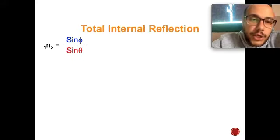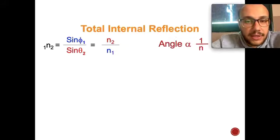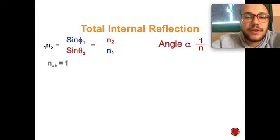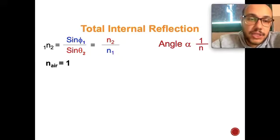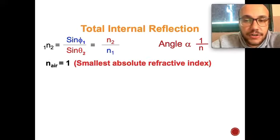Using Snell's law: n₁sinφ₁ = n₂sinφ₂. The angle is inversely proportional to the refractive index. Remember that the refractive index of air equals 1, which is the smallest absolute refractive index. Therefore, the angle in air is the greatest.